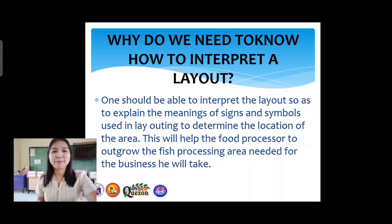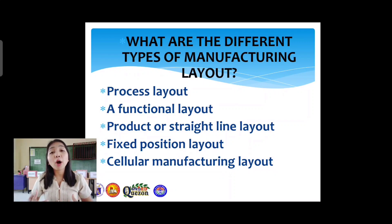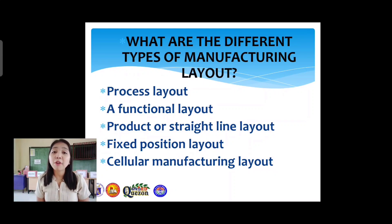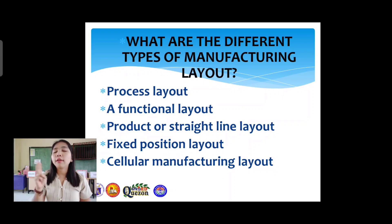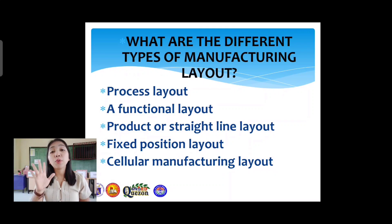This could also be a preparation for you if you wanted to take engineering courses, as these are some of the basic things you should know as future engineers or architects. So next, what are the different types of manufacturing layout? We have: process layout, functional layout, product or straight-line layout, fixed position layout, and cellular manufacturing layout.